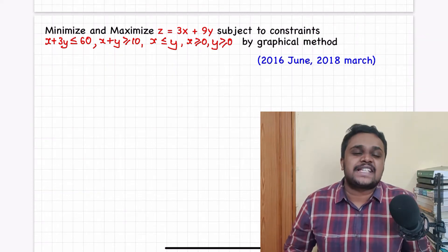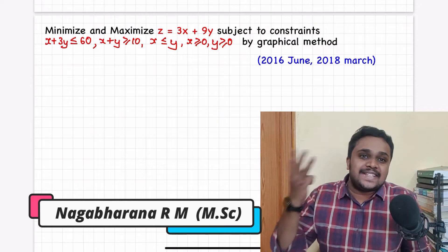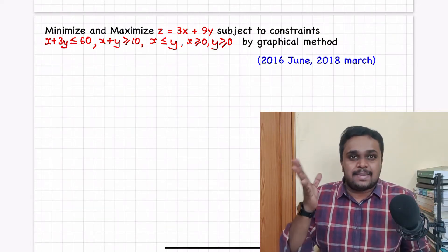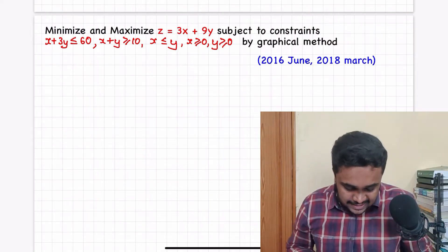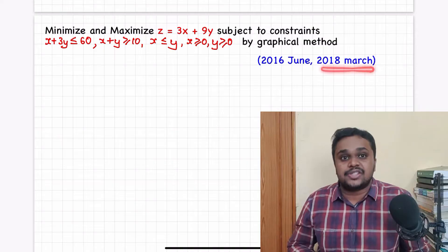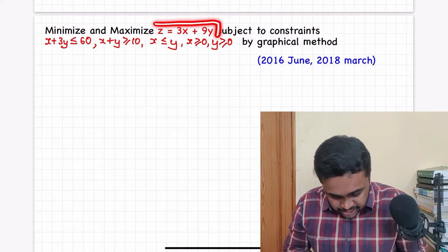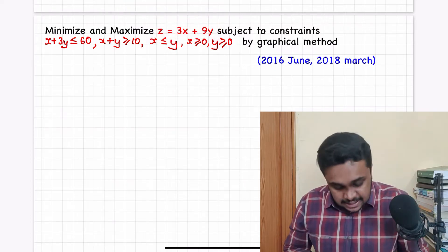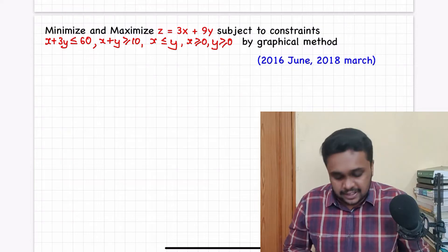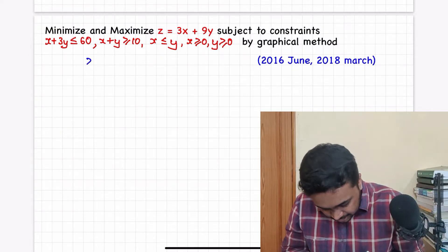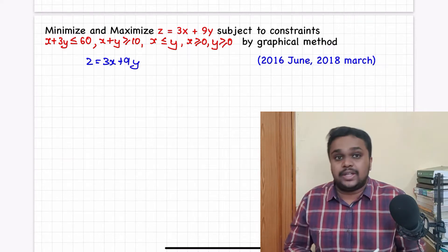Hello students and welcome to Physics Pep Talk. In this video, we will discuss 3 constraints in the LPP chapter — minimize and maximize the objective function z = 3x + 9y. This question was asked in 2016 June and 2018 March. We will solve it by the graphical method.